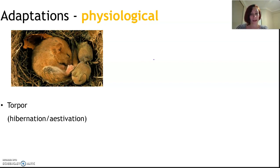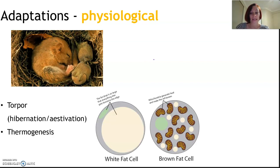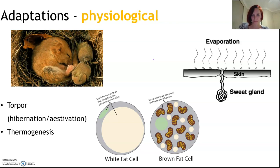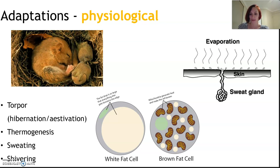Hibernation is prolonged torpor in endotherms, and estivation is prolonged torpor in ectotherms. Thermogenesis occurs in the cells of brown adipose tissue, which display increased numbers of mitochondria for more efficient energy creation and therefore greater heat generation. We also sweat for evaporative cooling and shiver. Some thermoregulatory mechanisms are described as both behavioral and physiological, and structural and physiological adaptations interact quite a lot.